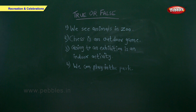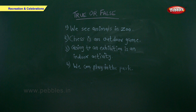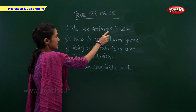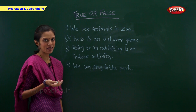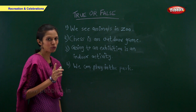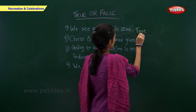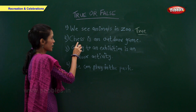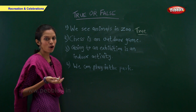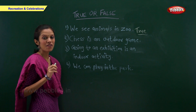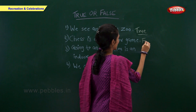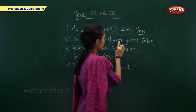True or False: We see animals in the zoo. True. Chess is an outdoor game. True or false? False — it is an indoor game.